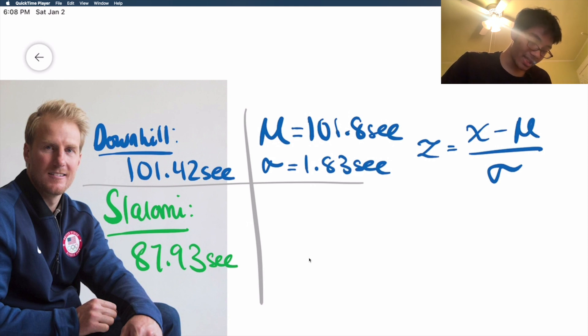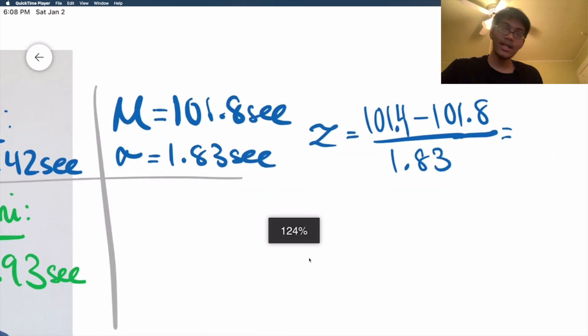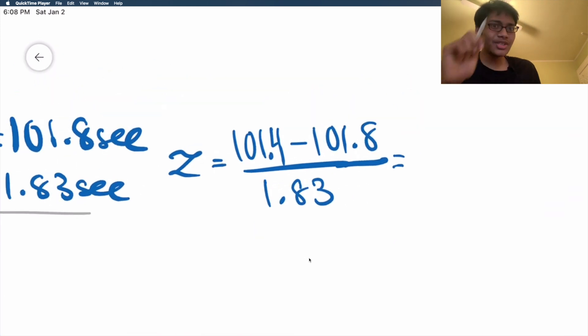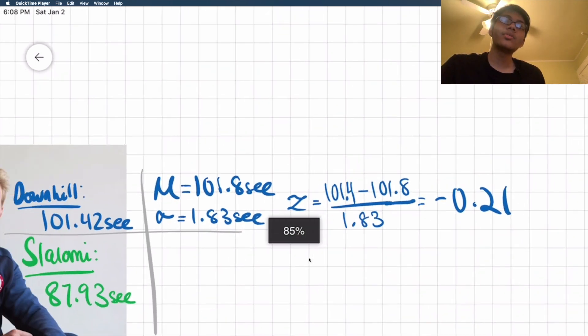What's our data value? Our data value is gonna be 101.42, or I'll just write 101.4. And what's our mean? Well, our mean time for this downhill race is gonna be 101.8. And divide all of that by our standard deviation of 1.83 seconds. Go ahead, plug that and chug that into your calculator. And what are you gonna get? You're gonna get the z-score, which has no units by the way. And in this case, it's gonna be minus 0.21. That's our z-score, and that's Ted's z-score for downhill racing.